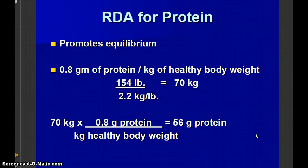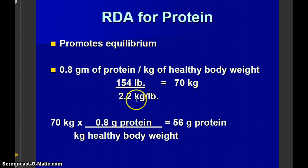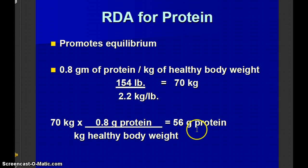You should calculate the RDA for protein for yourself because it's contingent upon your body weight. If your body is comprised of thousands of different proteins, then the recommended intake for protein would be based upon your body mass. Convert your weight in pounds to kilograms by dividing by 2.2, then multiply that value by 0.8 grams of protein per kilogram of body weight, and you'll get the recommended amount of protein you need each day.